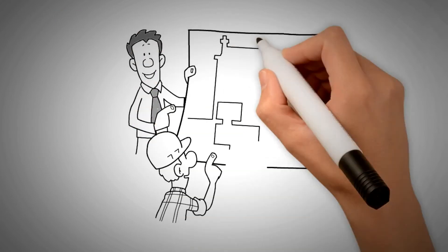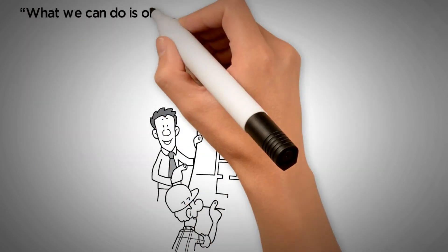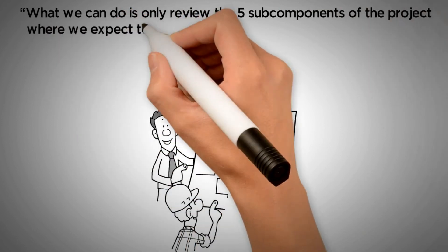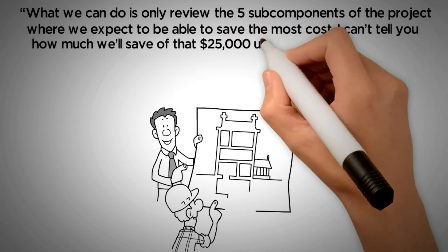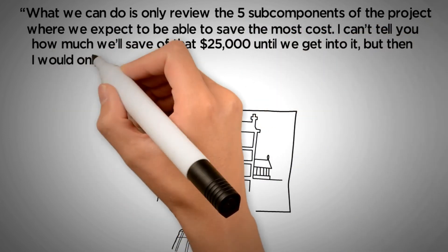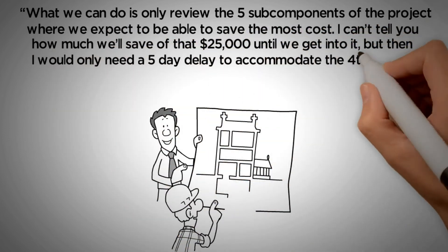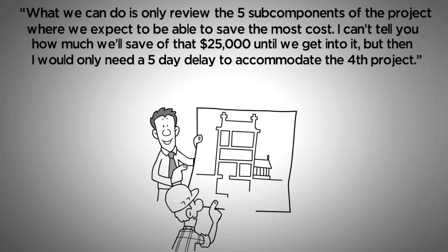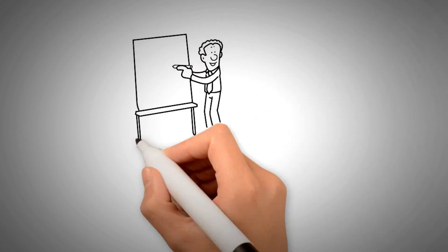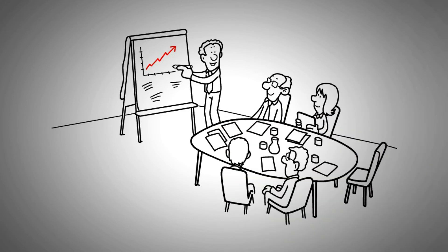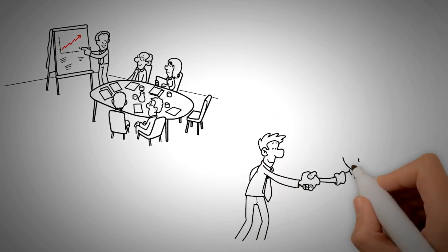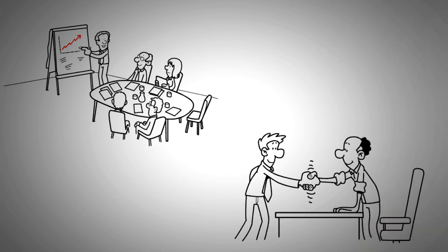What we can do is only review the five subcomponents of the project, where we expect to be able to save the most cost. I can't tell you how much we'll save of that $25,000 until we get into it, but then I would only need a five-day delay to accommodate the fourth project. Explain to them the most similar achievable action, product, or service that will aid or fulfill their intent.